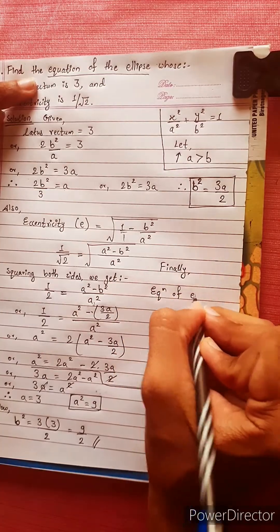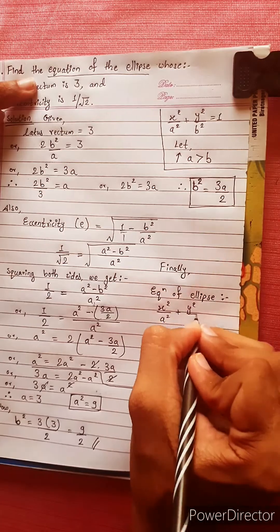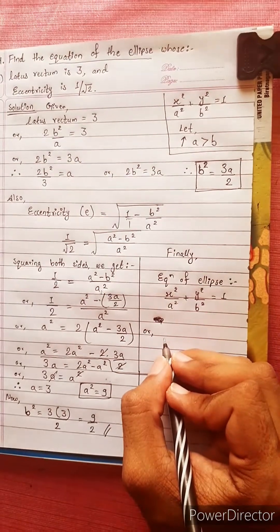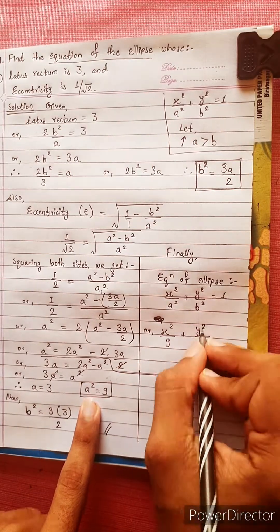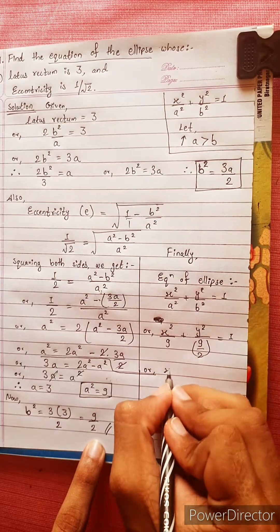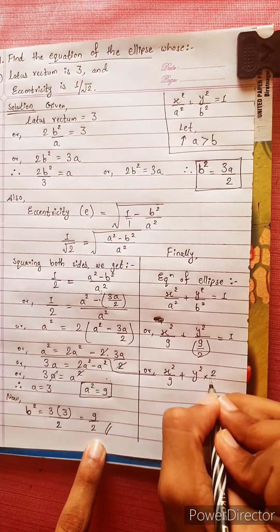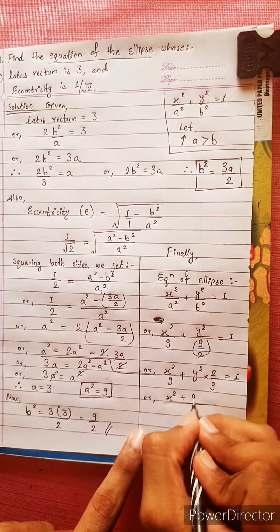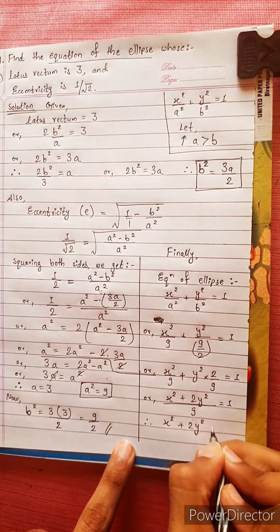The equation of the ellipse is given by x squared divided by a squared plus y squared divided by b squared equals 1. Substituting a squared equals 9 and b squared equals 9 by 2: x squared divided by 9 plus y squared times 2 by 9 equals 1. Taking 9 common, the final equation is x squared plus 2y squared equals 9.